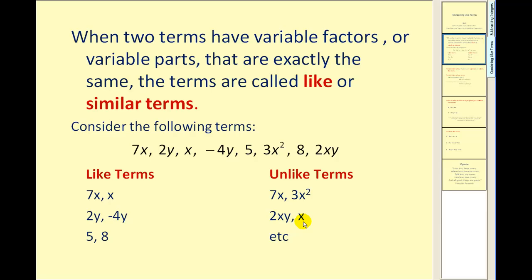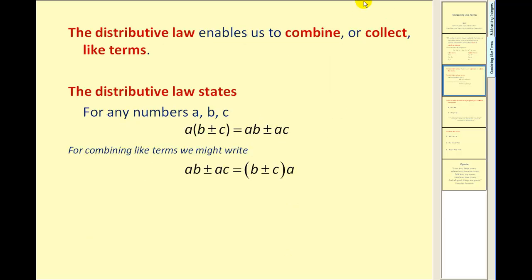2xy and x are also unlike terms because this variable part is xy and this variable part is just x. Therefore they are unlike terms. Now there are many other examples in this list of unlike terms but I think you get the idea. Now let's take a look at how we are going to be combining like terms.